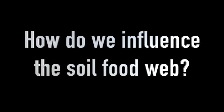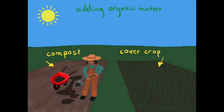So how can we as producers influence the soil food web? First, we can use techniques that add organic matter to the soil, since this brings food to the system and providing food for the organisms increases their populations. And second, if it's a relatively new or damaged soil food web, we can add compost, compost tea, or manure to jumpstart the microbial community.